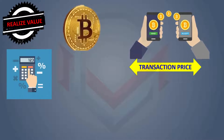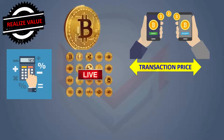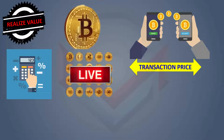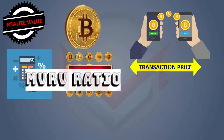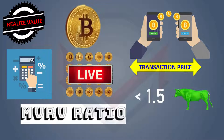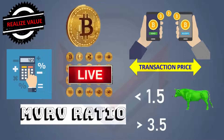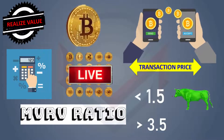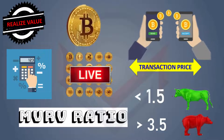Let's calculate the real value of Bitcoin, considering the coins in live circulation. Usually, an MVRV ratio of 1.5 or above indicates a bullish trend, and 3.5 or above indicates a bearish trend.